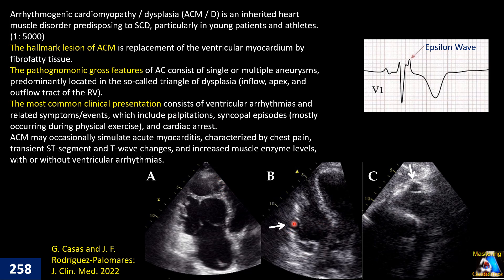The triangle of dysplasia is usually located at the base of the right ventricular free wall, the right ventricular free wall at the apex, and the RVOT. However, different variants in shape and size can be expected, even involving the left side. Another not uncommon finding, especially in the classic presentation, is hyperechogenicity and a prominent moderator band.